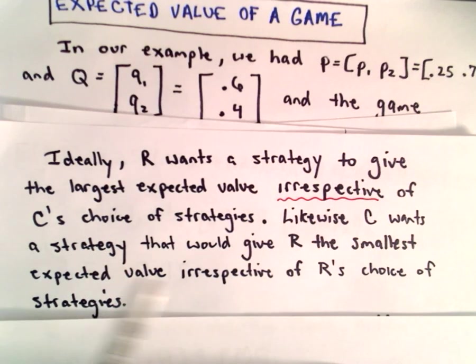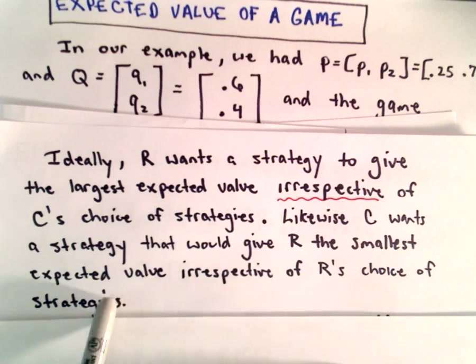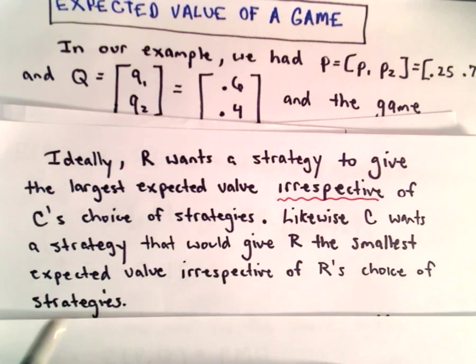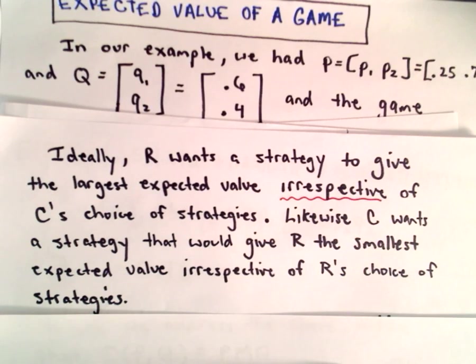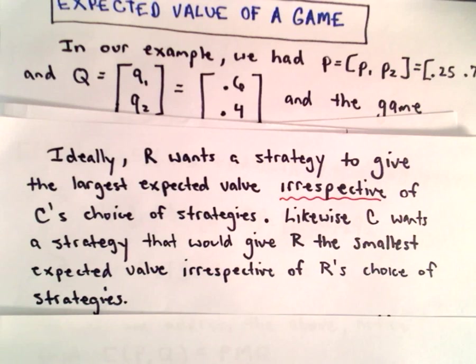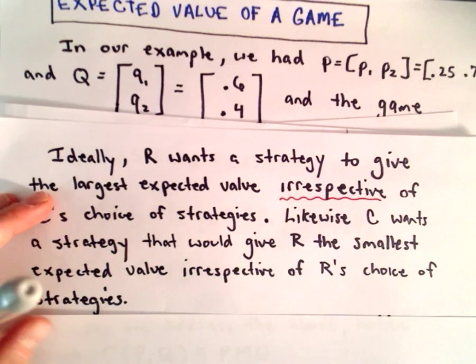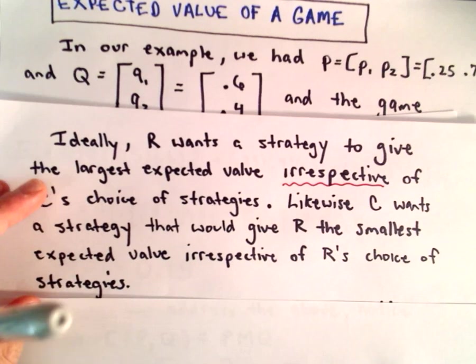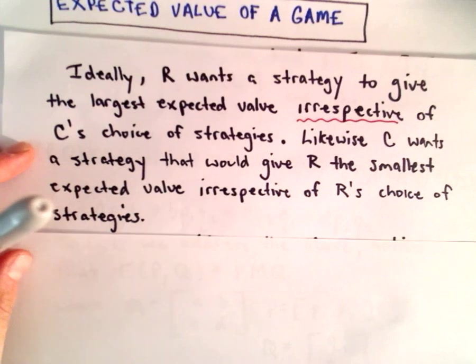Likewise, the column player wants a strategy that would give the row player the smallest expected value. Well, because if it's small, that means the column player is either paying the smallest amount possible or likewise, if it's negative, it says they're actually getting as much money as possible on average. So they want the strategy that would give R the smallest expected value, irrespective of R's choice of strategies. So it's interesting. Basically it says they're both trying to win as much money as possible, no matter what the other person does.